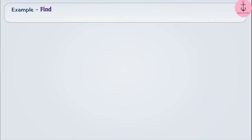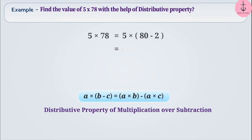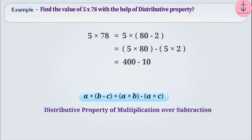Next example: find the value of 5 into 78 using the distributive property. We can write 5 into 78 as 5 into (80 minus 2). This can be written as 5 into 80 minus 5 into 2, by the distributive property of multiplication over subtraction. Solving this, we get 400 minus 10, which is equal to 390. By using the distributive property, we can find solutions very easily.